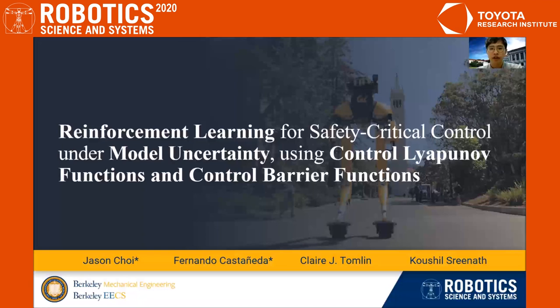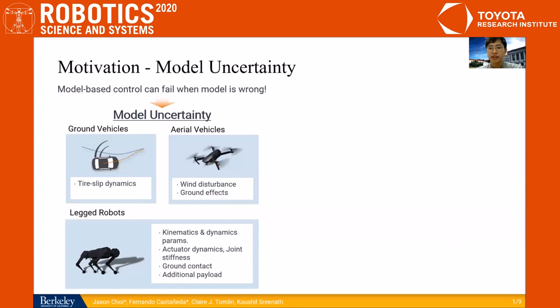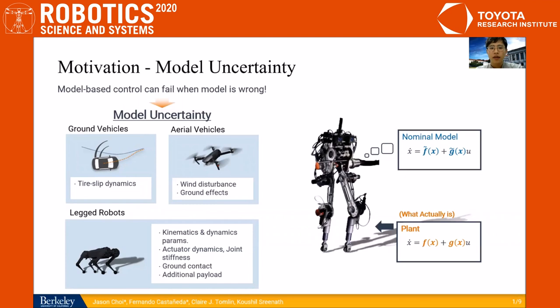Model uncertainty is present in all kinds of systems from ground and aerial vehicles to legged robots. In this work, we deal more closely with legged robots, which suffer from many kinds of model uncertainty. This is why we assume that the model that we have is different from the true plant dynamics. We consider control-affine systems, and we will deal with model uncertainty reflected in the vector fields f and g.